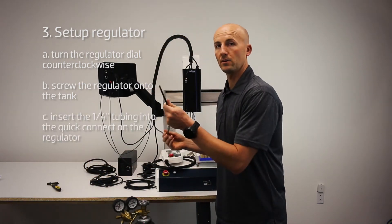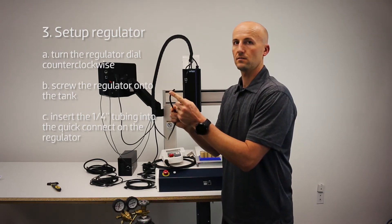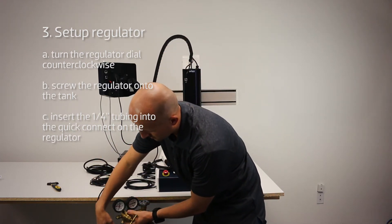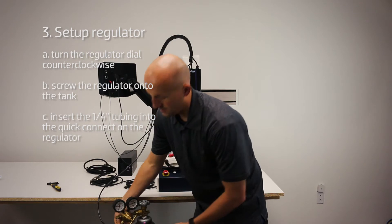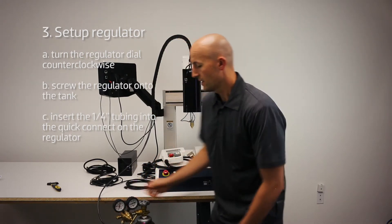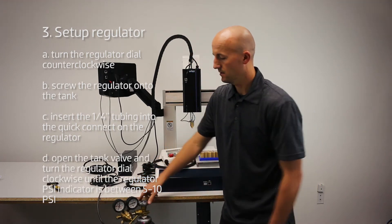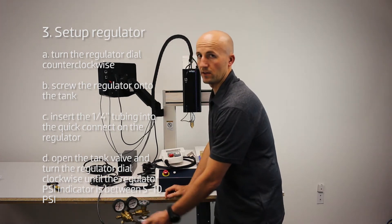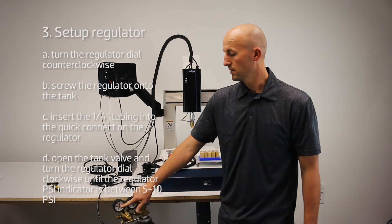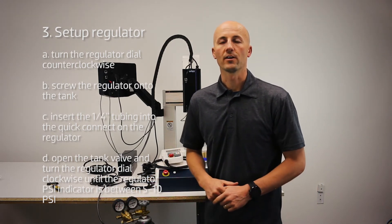Now plug this quarter inch tubing from the Janome into the side of your regulator and give it a little tug to make sure it's secure. It's a quick connect. After that, open the gas tank and turn the regulator dial clockwise until the PSI shows between 5 and 10 PSI. That's where you want to be with your argon regulator pressure.